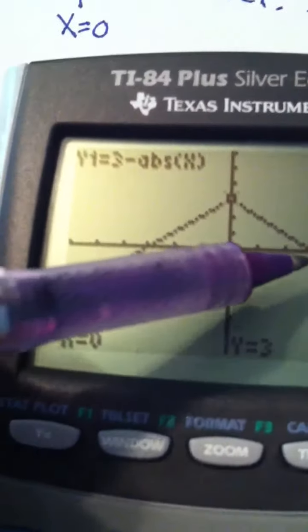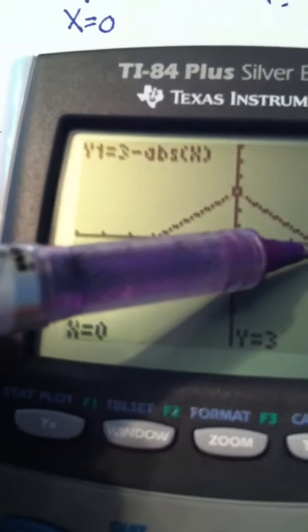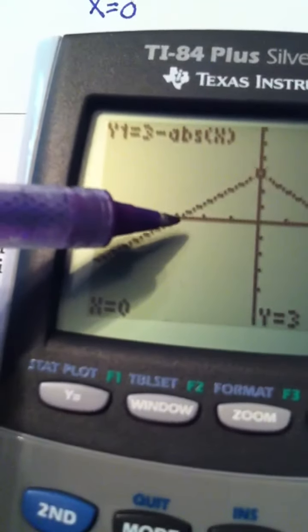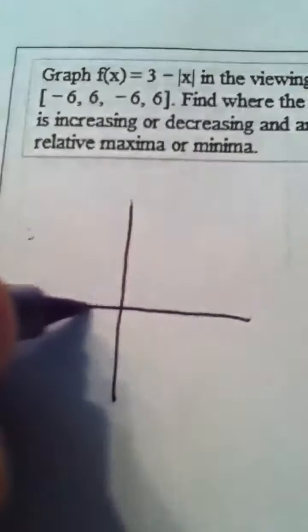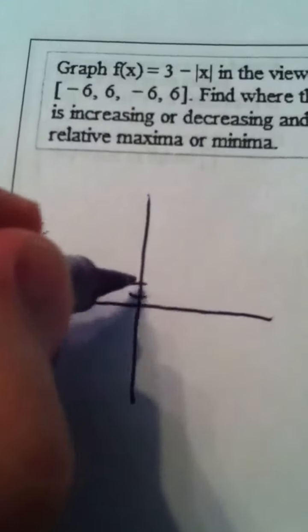And I can also notice the graph crosses the x-axis at positive 3 and at negative 3. So when I trace this graph on my paper, I have the ordered pair 0, 3 here.